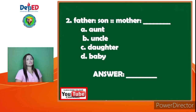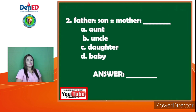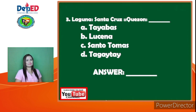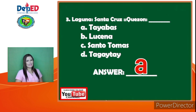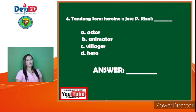Number 2: Father is to son as mother is to — A. Aunt, B. Aunt, C. Daughter, D. Baby. The answer is C, Daughter. Number 3: Laguna is to Santa Cruz as Quezon is to — A. Tayabas, B. Lucena, C. Santo Tomas, D. Tagaytay. The answer is letter A, Tayabas.